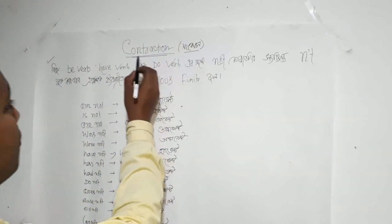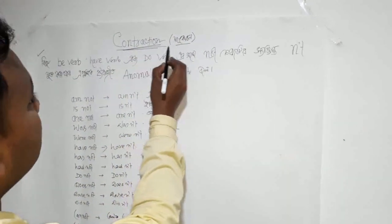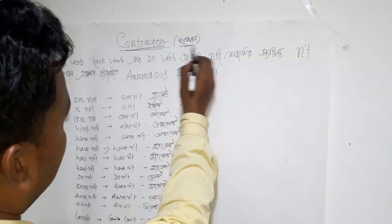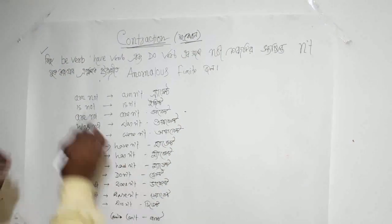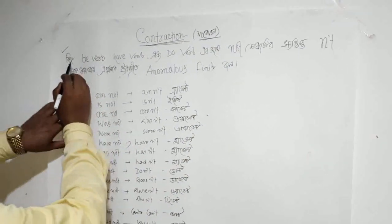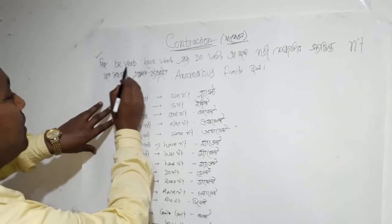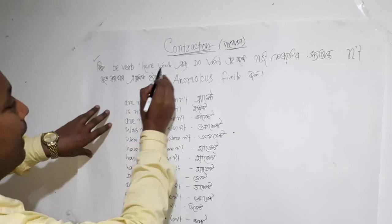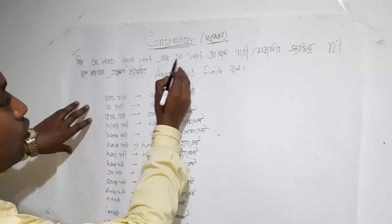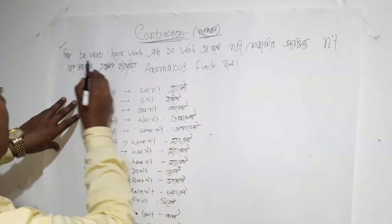First, the contracted form — in Bangla it is called 'shankuchan.' Here we go: which is the b-verb, the have-verb, and the do-verb.